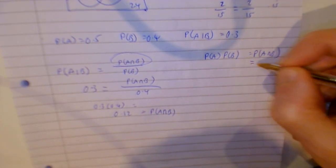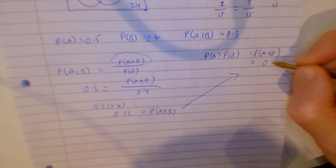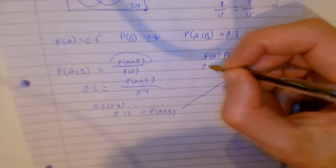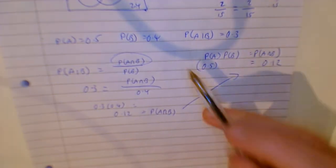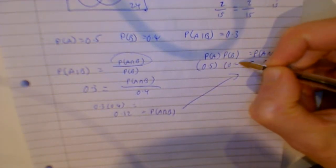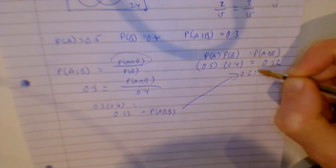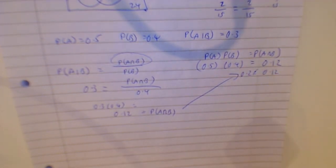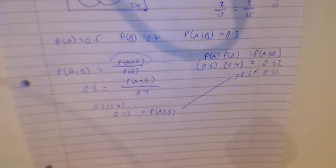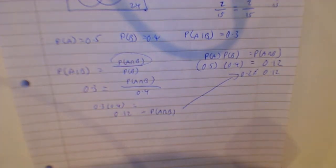Now we check independence: P(A) times P(B) should equal P(A ∩ B). P(A) is 0.5 and P(B) is 0.4, so 0.5 times 0.4 is 0.2 - which does not equal 0.12. They are not independent. You're going to be given lists of dependent and independent events, and you'll understand once you see those.